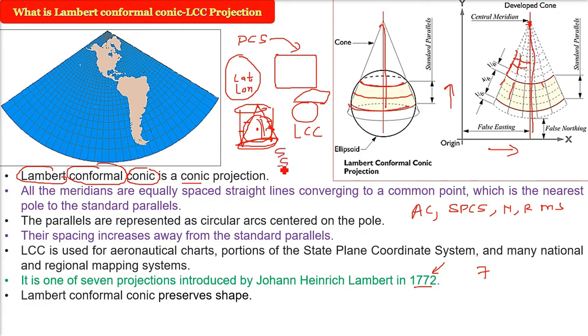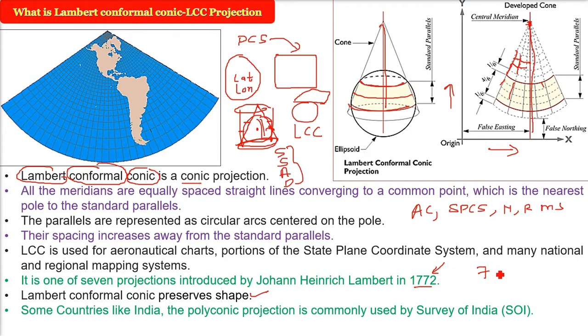Now we have the Lambert conformal conic. It preserves the shape because size, shape, area, direction, angle - all these cannot be saved or preserved. The conformal conic preserves shape.